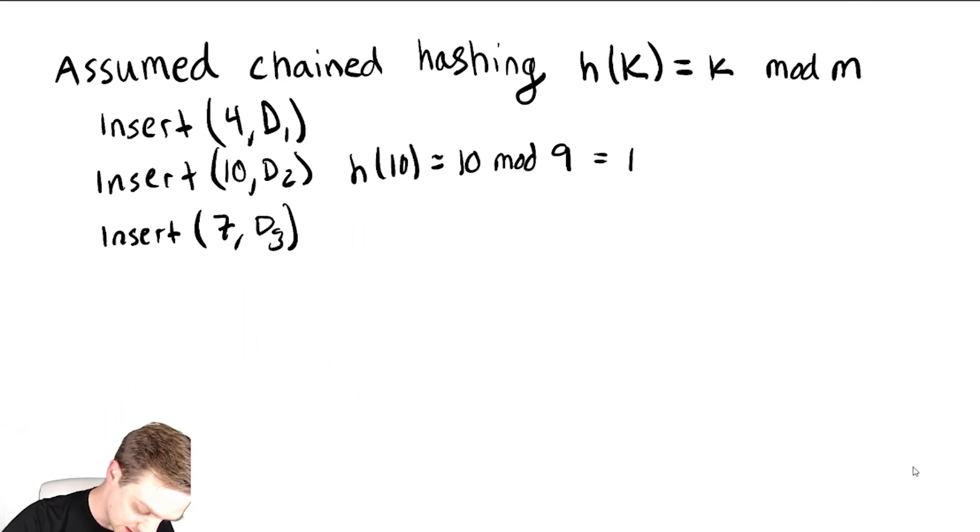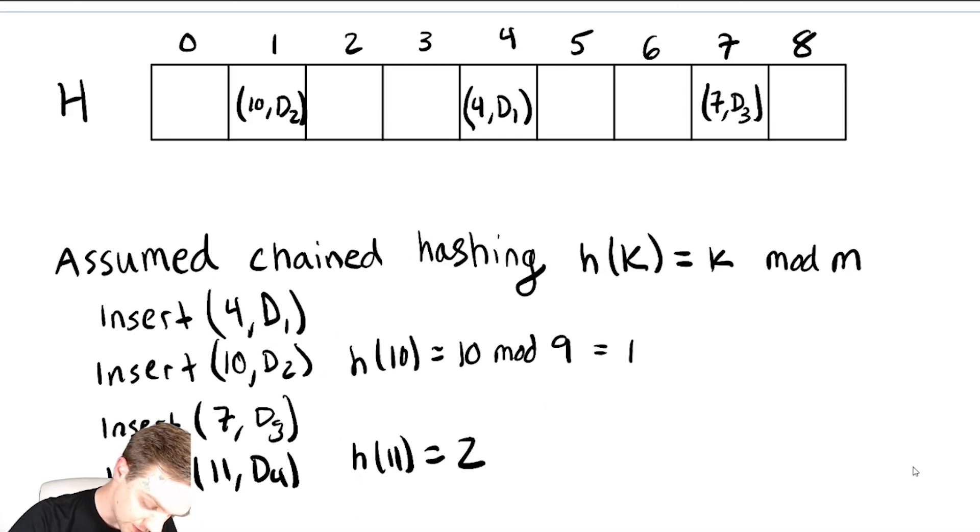Now let's suppose we needed to do an insert with 11, d4. That's h of 11, that should be 1 more than h of 10, so that gives us 2. We get 11, d4.